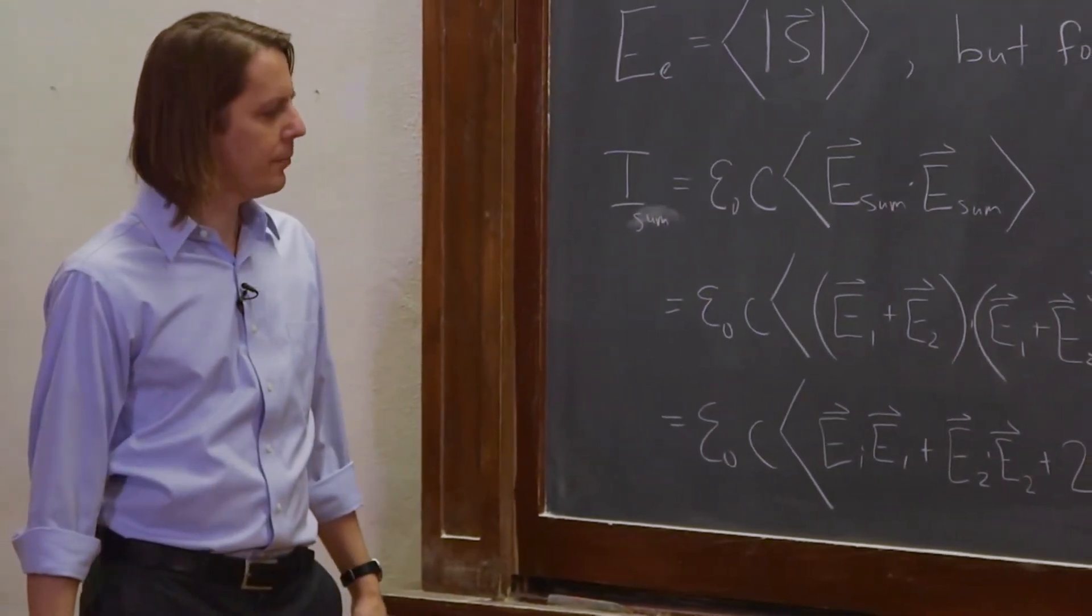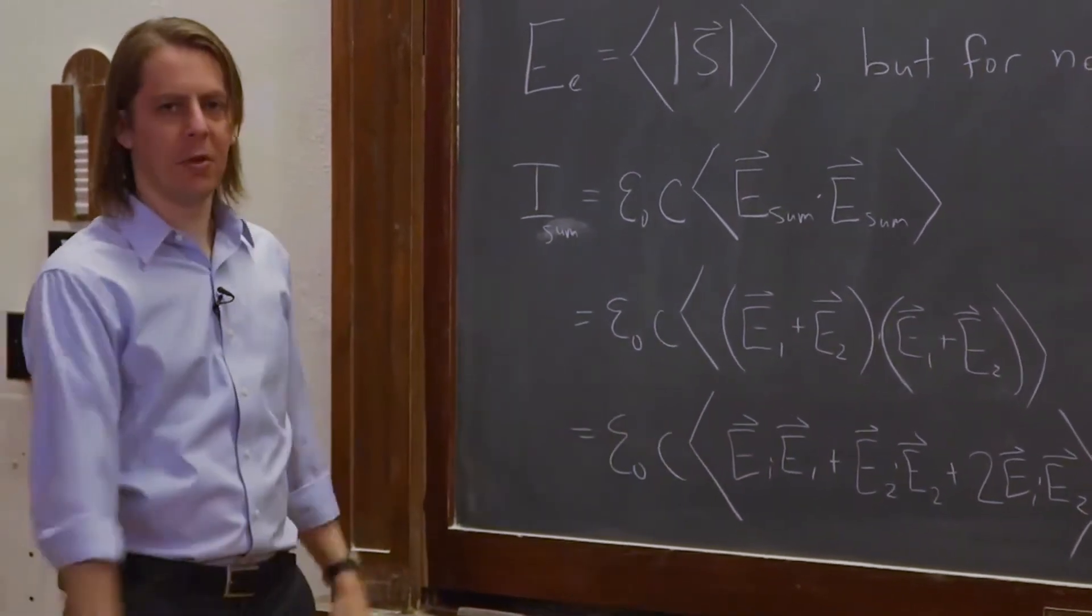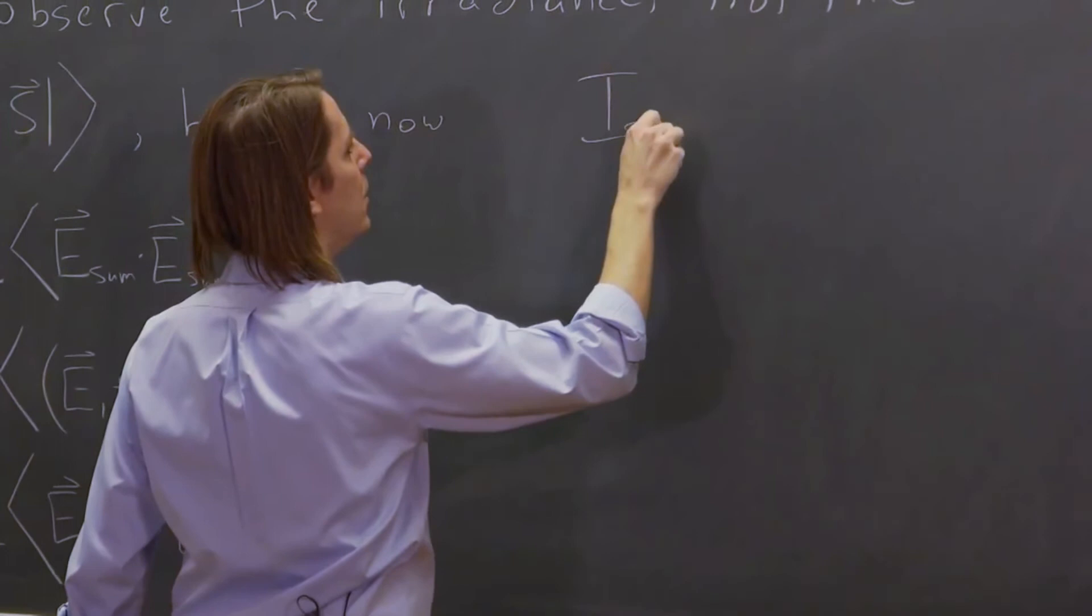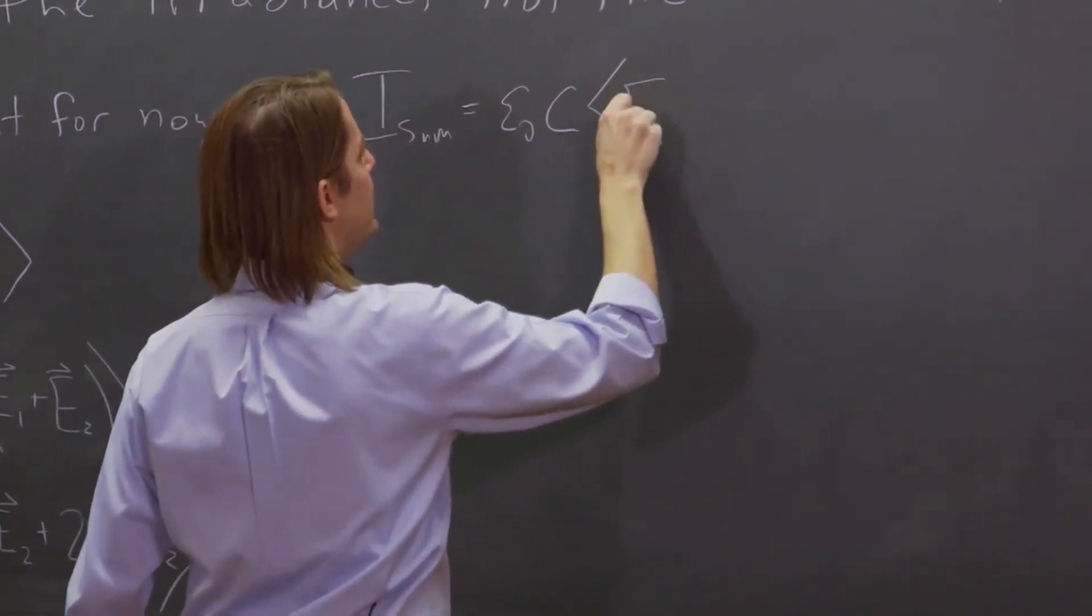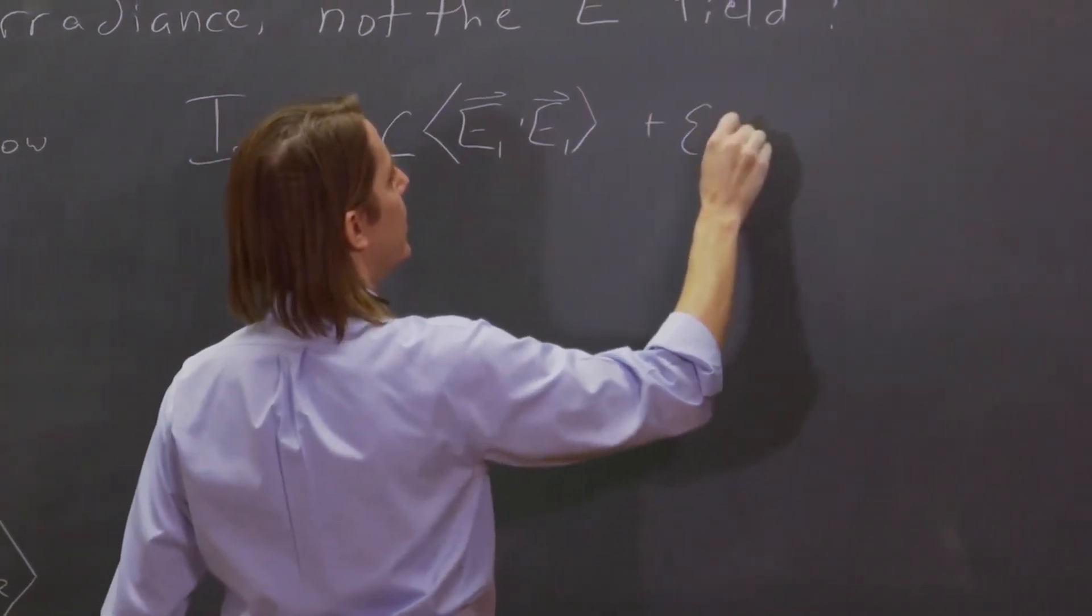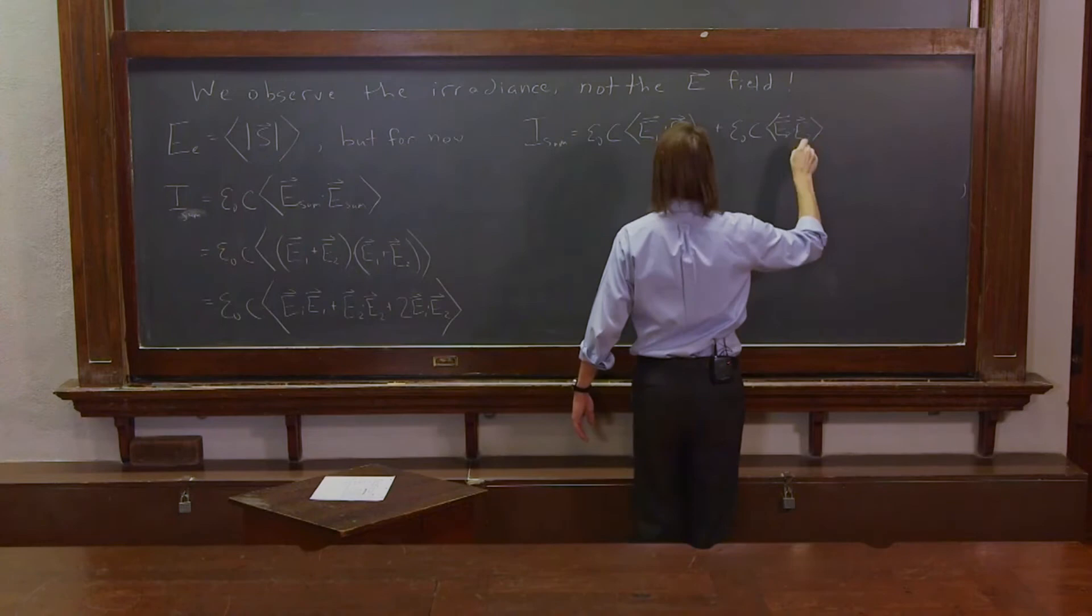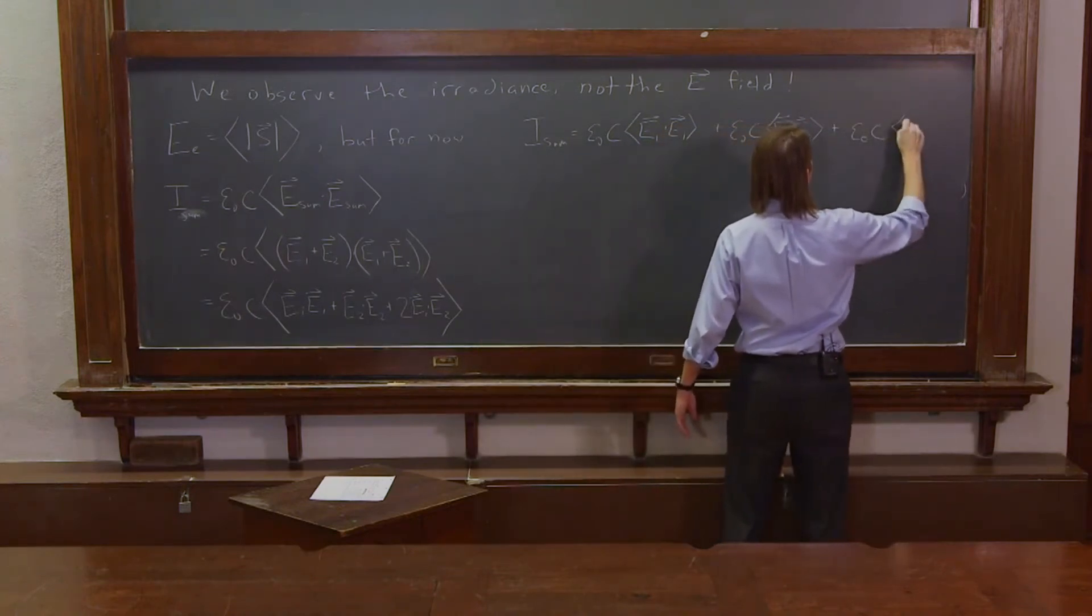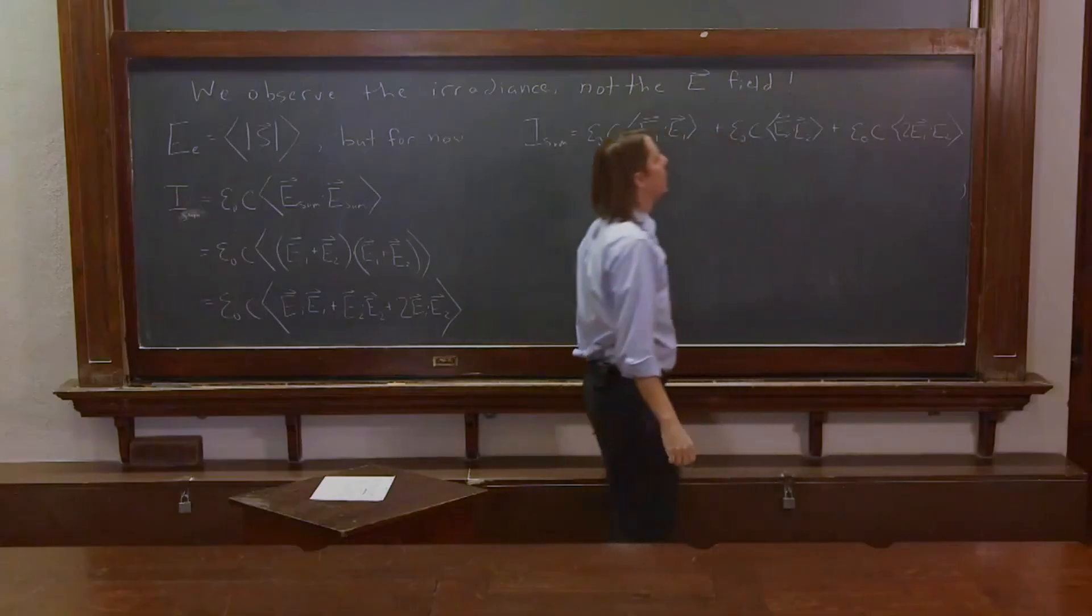The time average you can distribute across those. You don't have to take the time average of the whole thing. You can add up your time averages. So you get that I_sum is epsilon_0 C times the time average of E1 dot E1 plus epsilon_0 C times the time average of E2 dot E2 plus epsilon_0 C times the time average of 2 E1 dot E2.